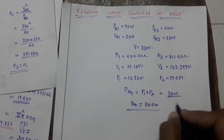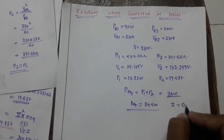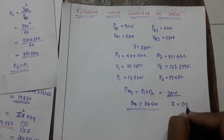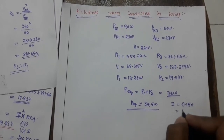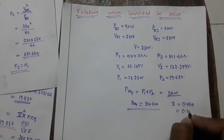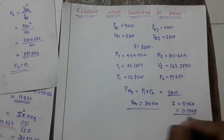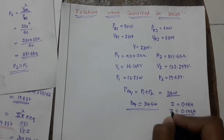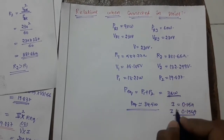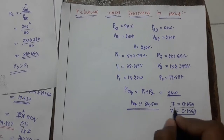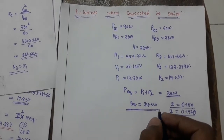This difference is because I have taken only two digits after the decimal point for the current I. The actual current is 0.156 amperes. If I take I = 0.156 amperes I will get 36 watts. If I take I = 0.15 I will get 34.5 watts.